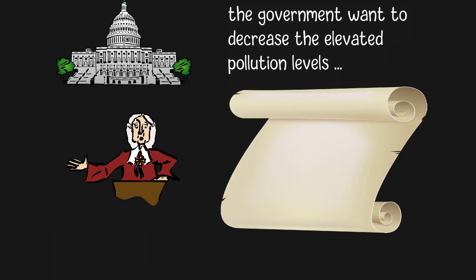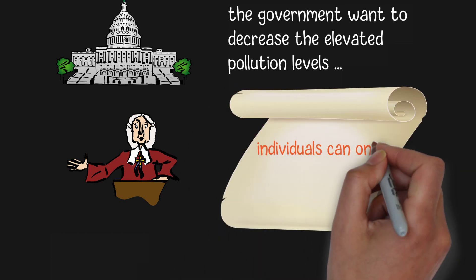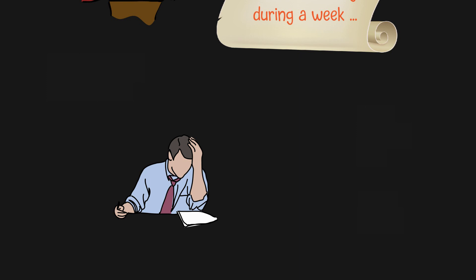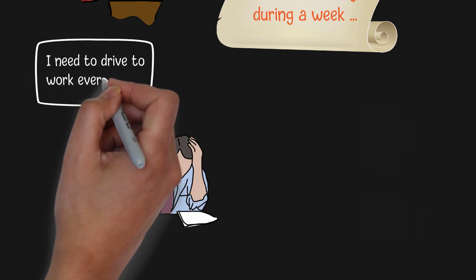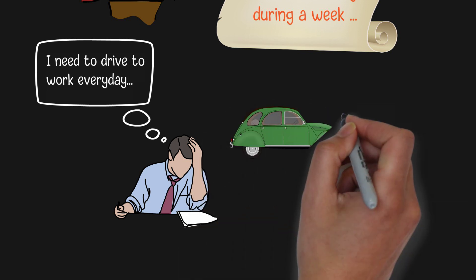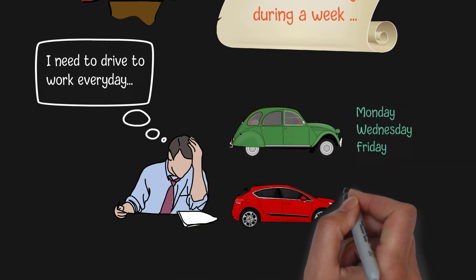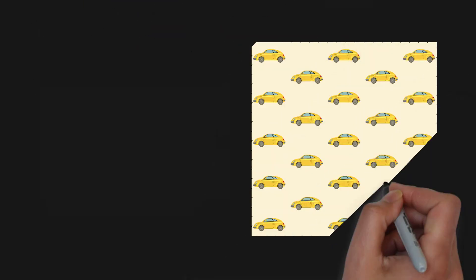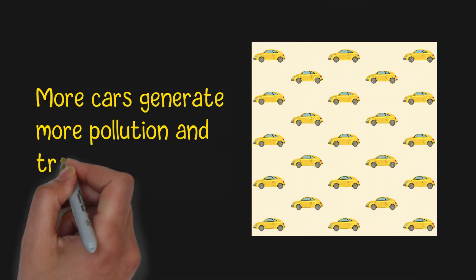To realize this goal, the government may make a law to restrict individuals to only drive a few days during a week. This plan seems to be straightforward. However, a lot of families need to work every day. Since they are not inclined to violate the law by engaging in any dubious activities, they have to buy more cars to satisfy their needs to drive every day. This generates more pollution and traffic congestion because there are more cars in the city.